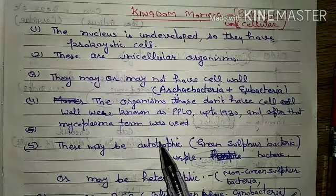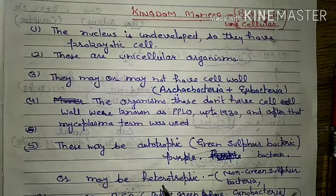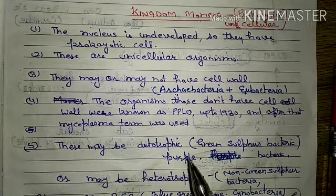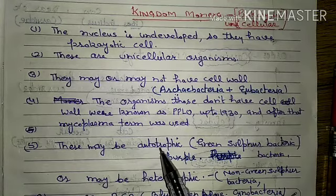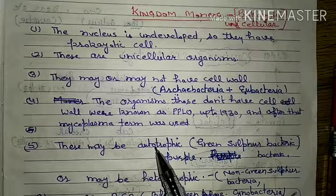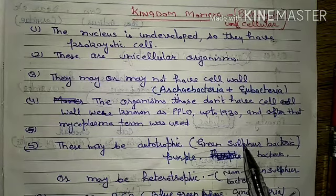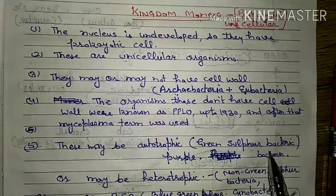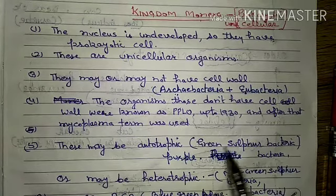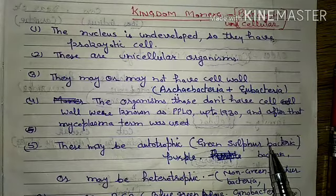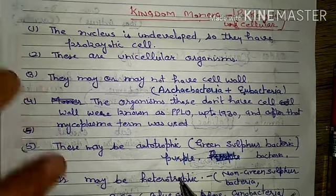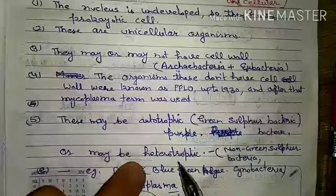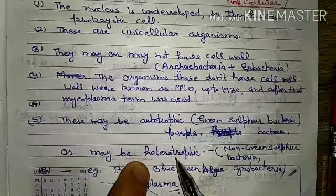These organisms may be autotrophic or heterotrophic. Autotrophic organisms prepare their own food — for example, green sulfur bacteria, purple bacteria, and blue-green algae. Heterotrophic organisms depend on others for their food.